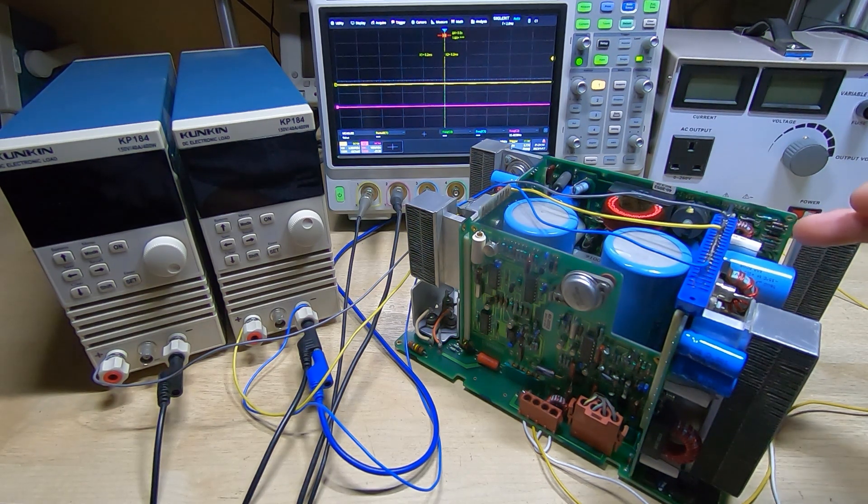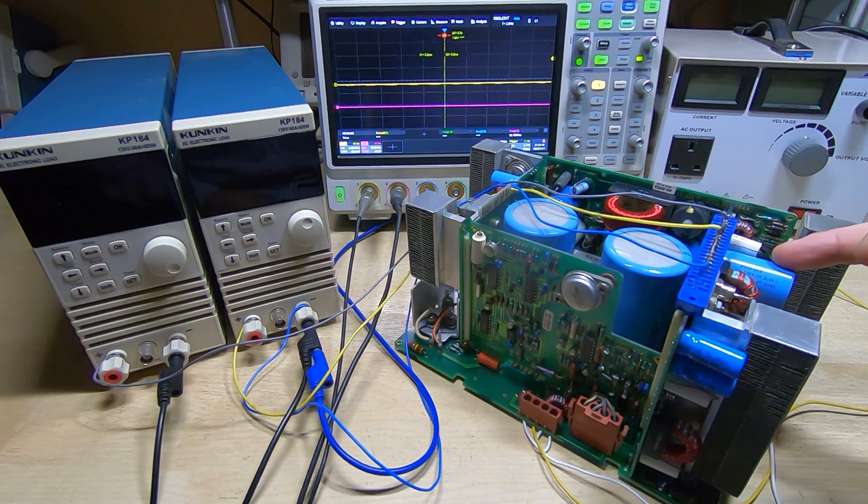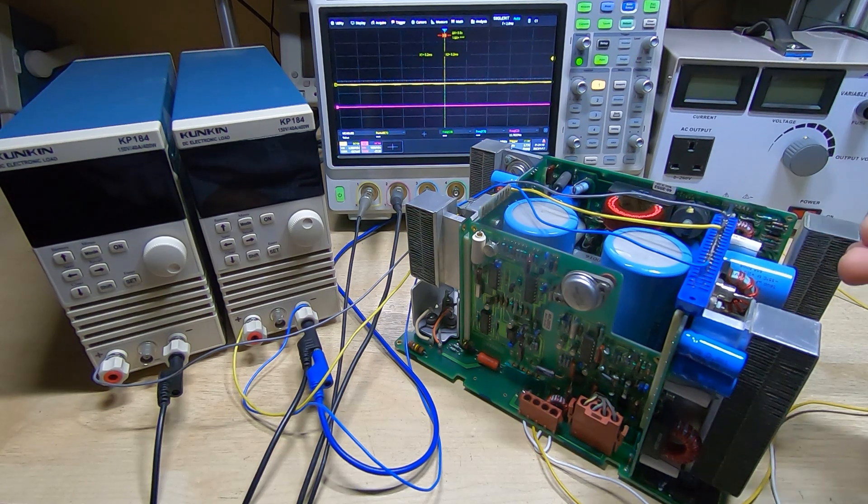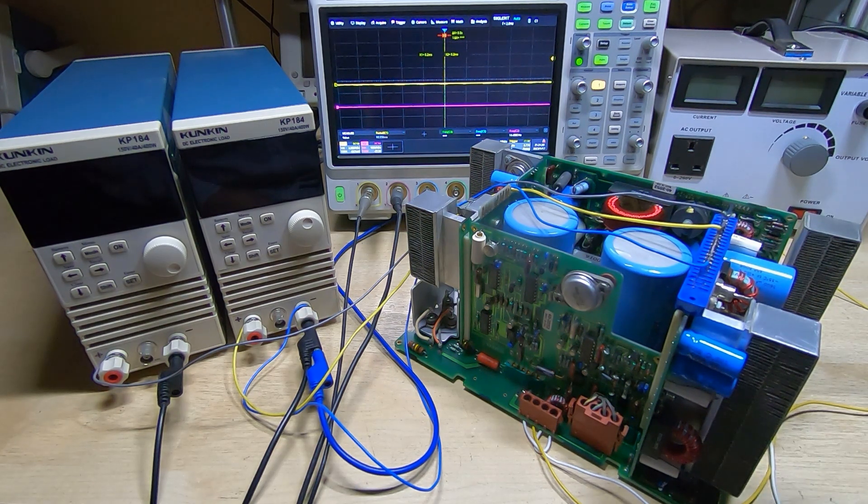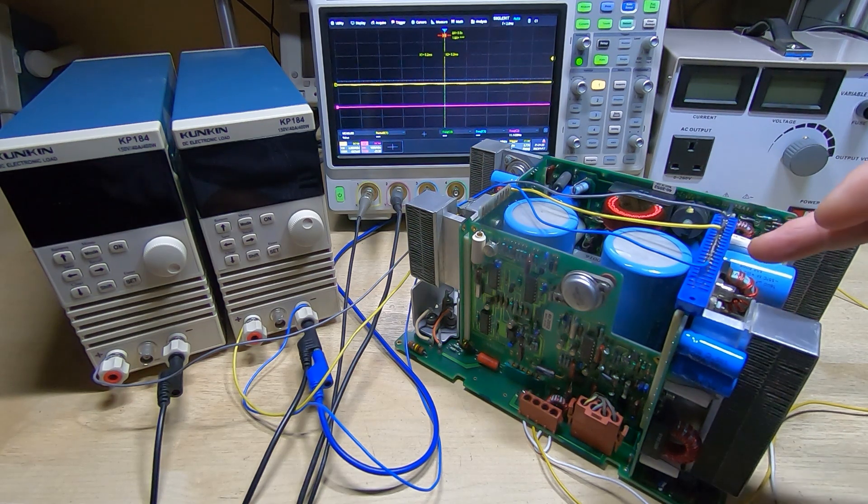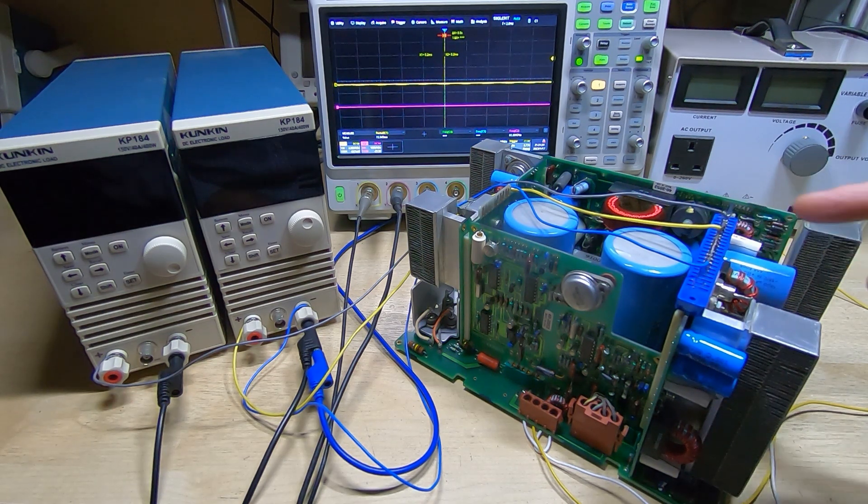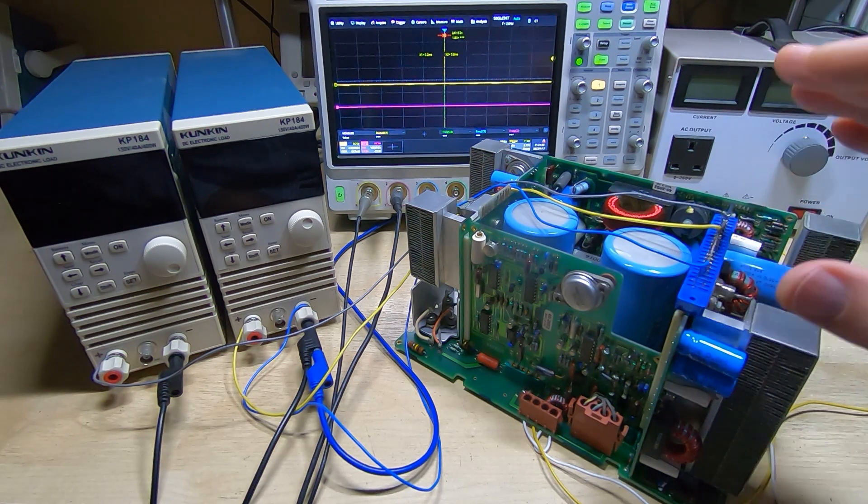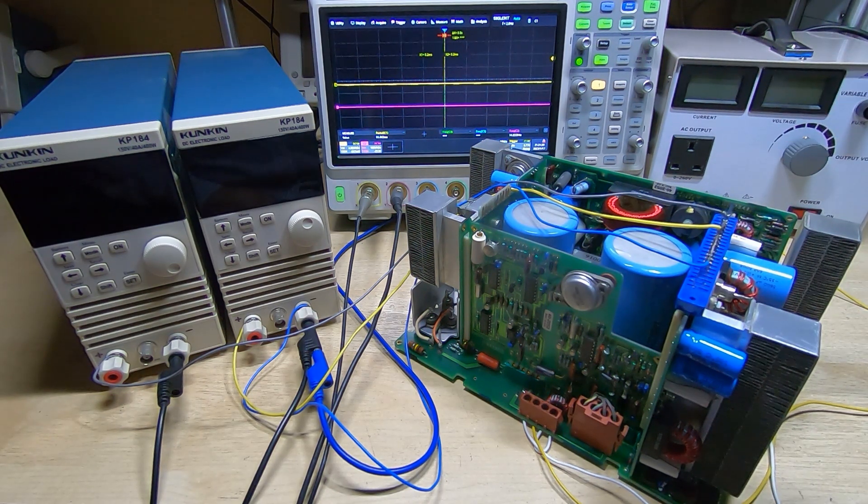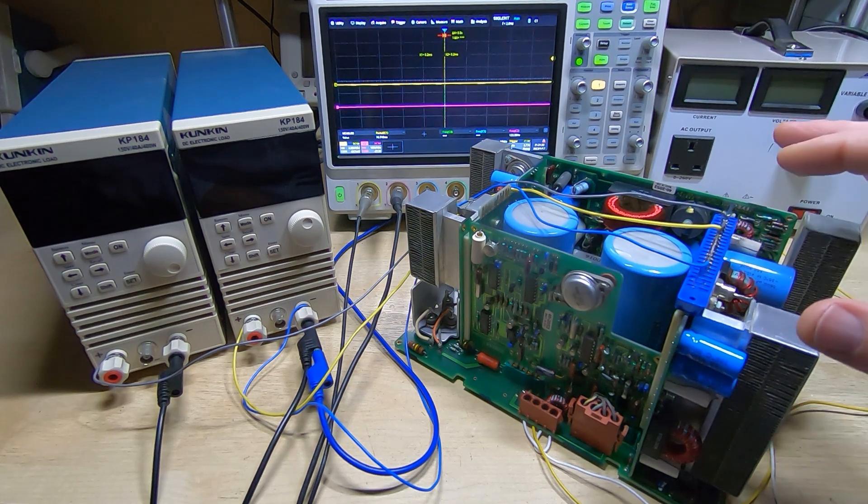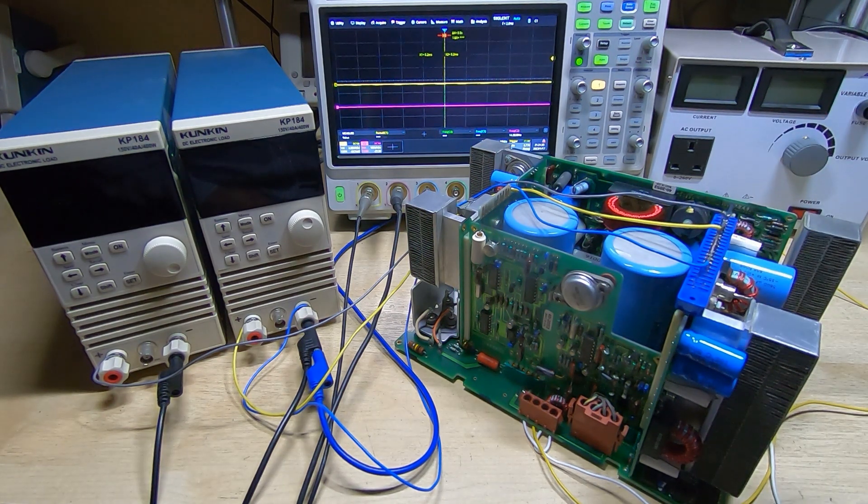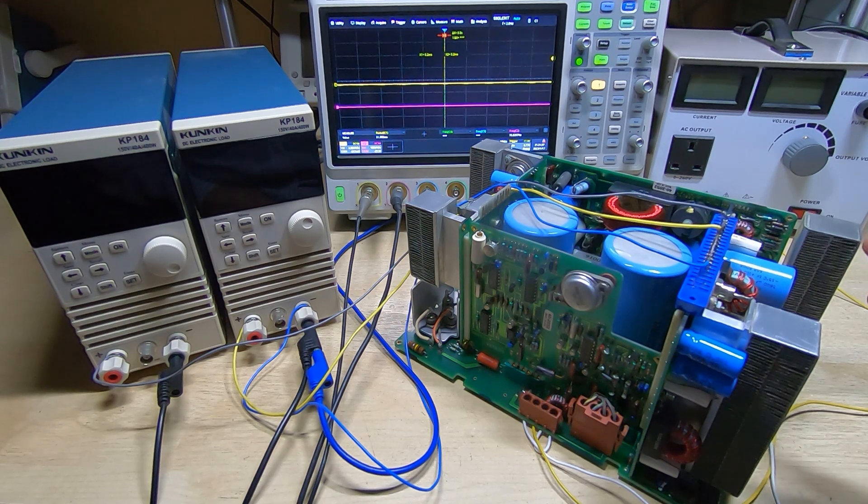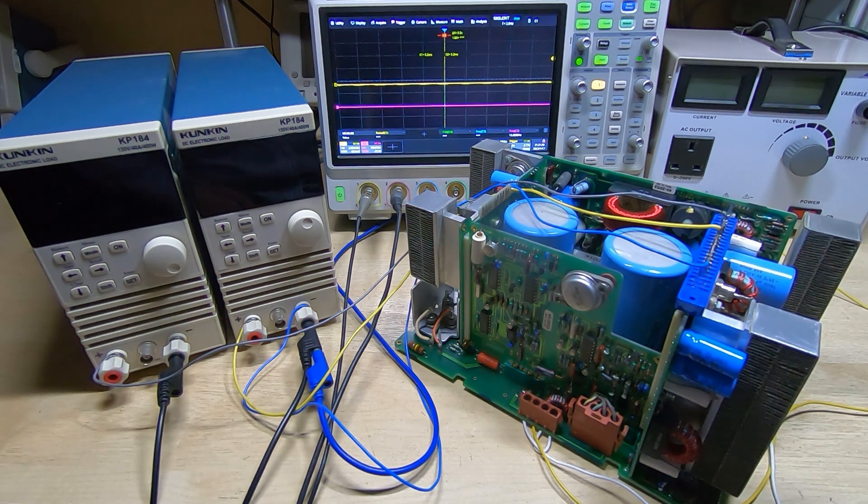So I repaired that. Unfortunately the ground trace for that is on the top side of the board, so I scraped away some of the solder mask, soldered a wire on, passed that through the hole, put the new cap in, soldered the two together, reassembled it, and it's now working fine. From that point on I just started loading up all the supplies.